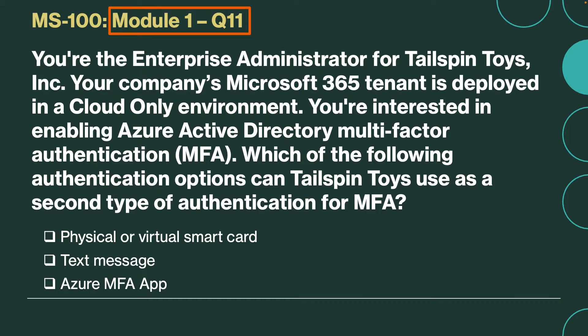Question number 11. You are the enterprise administrator for Tailspin Toys. Your company's Microsoft 365 tenant is deployed in a cloud-only environment. You are interested in enabling Azure Active Directory multi-factor authentication. Which of the following authentication options can Tailspin Toys use as a second type of authentication for MFA? Is it physical or virtual smart card, or text message or Azure MFA app? The correct answer is text message. In a cloud-only deployment, Azure Active Directory MFA authentication options include text message, phone call, and use of a mobile app.